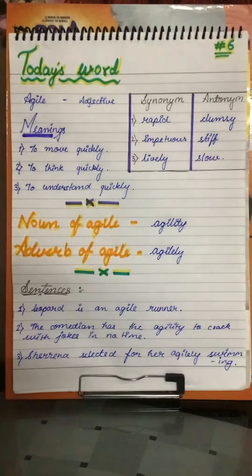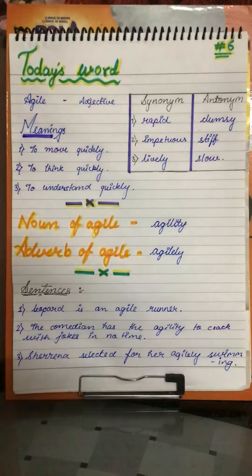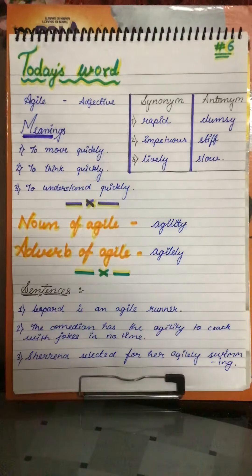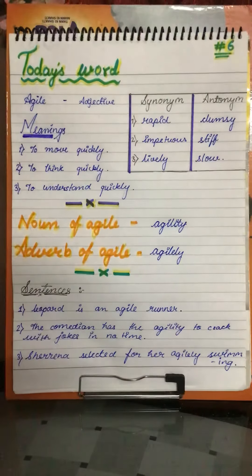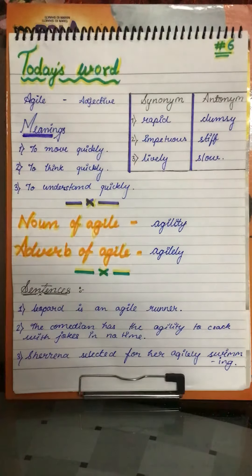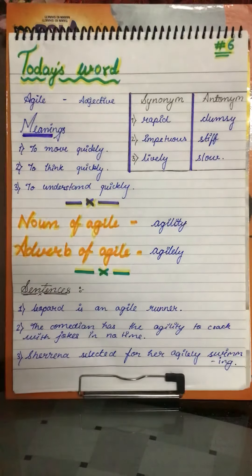Today you learned the word agile, which is an adjective. Its noun form is agility and its adverb form is agilely. You have also learned three synonyms, three antonyms, and three sentences for your daily conversations.